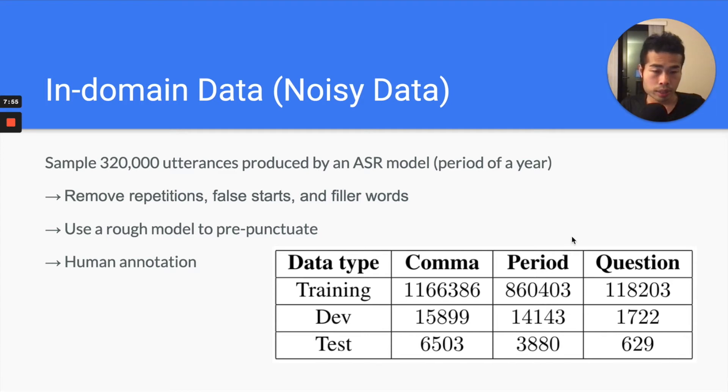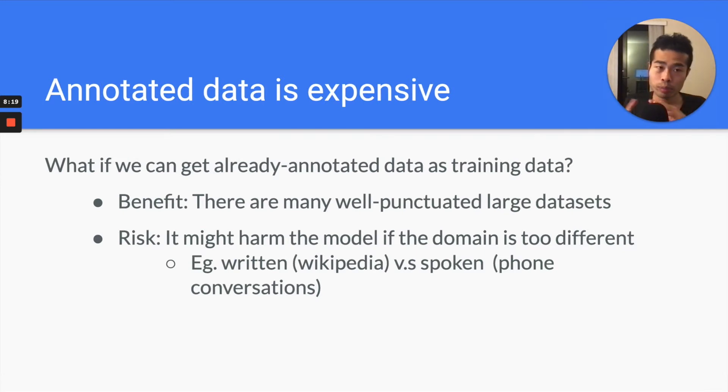So this here is the distribution of different punctuation category. You can see the most punctuation mark in this dataset is comma, and then the next is period, and then questions. We also, even we pre-punctuated, still figured out the annotated data is very expensive. So even the annotators just need to correct the punctuations, that still is extremely time consuming and very expensive.